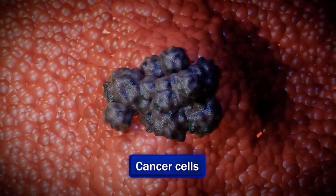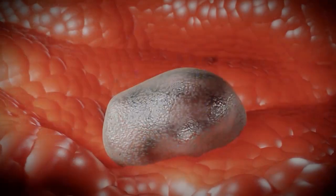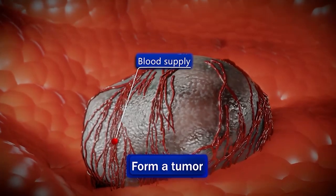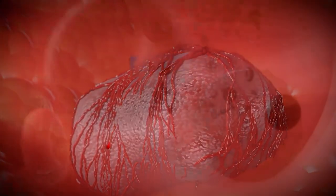As cancer cells multiply and crowd out normal cells, they form a tumor that, as it grows, develops its own blood supply.